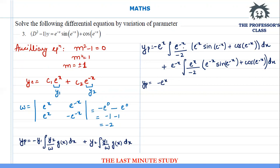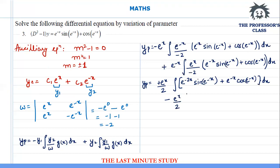Simplifying: -e^x · (1/2) · ∫e^(-2x)·[sin(e^(-x)) + cos(e^(-x))] dx, minus e^(-x)/2 · ∫e^(x-x)·[sin(e^(-x)) + cos(e^(-x))] dx. The e^(x-x) = 1, so the second integral becomes ∫[sin(e^(-x)) + cos(e^(-x))] dx.